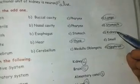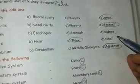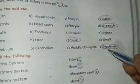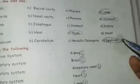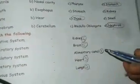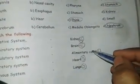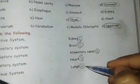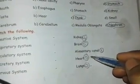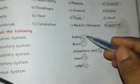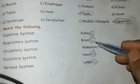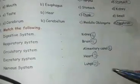Circle the odd word out: first one lungs, second one stomach, third one kidney, fourth one think, fifth one nephron. Match the following: digestive system — alimentary canal; respiratory system — lungs; circulatory system — heart; excretory system — kidney; nervous system — brain. Answers: four, five, one, three, two.